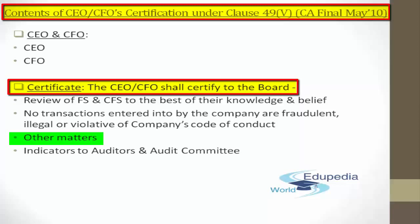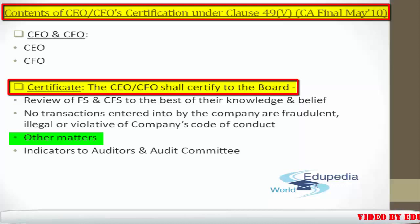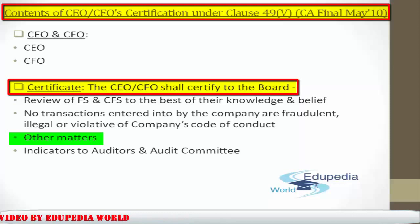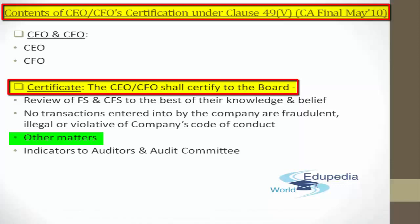They need to indicate to the auditors and the audit committee any significant changes in internal control over financial reporting during the year, or any significant changes in accounting policies during the year, with the same disclosed in the notes to financial statements. Lastly, they need to point out all instances of significant fraud of which they have become aware, including any involvement of management or employees having a significant role in the company's internal control system over financial reporting.